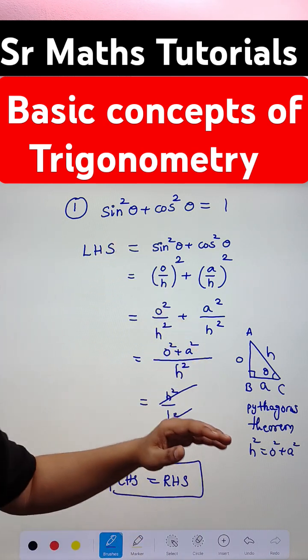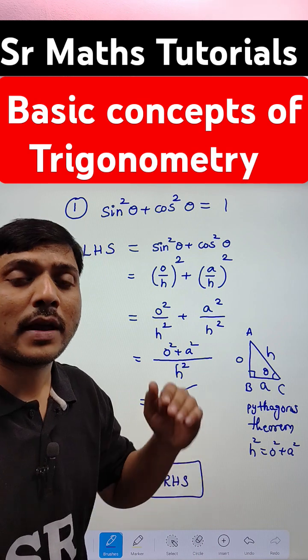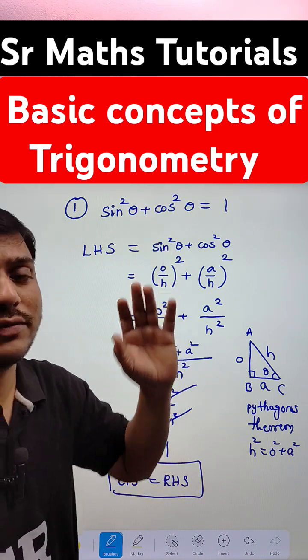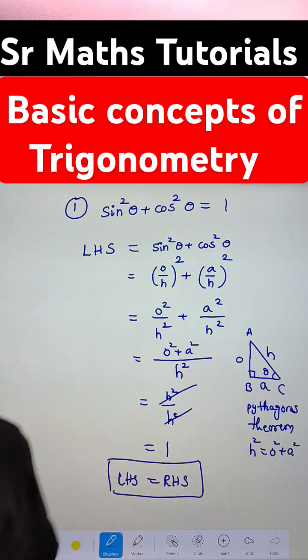So this is the first identity in trigonometry ratios. Sin square theta plus cos square theta is equal to 1. Thank you very much.